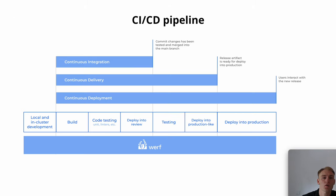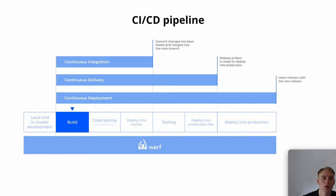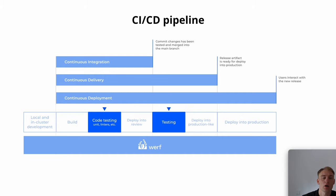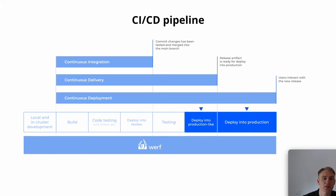Werf can be used not only for building CI/CD but also for local and in-cluster development. In the context of CI/CD, Werf can be used for building, tagging, and publishing images; running source code and application testing in Kubernetes; deploying temporary environments such as review and dev; and deploying persistent environments — production-like and production.